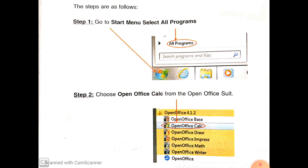Step 1: Go to Start menu, select all programs. Step 2: Choose OpenOffice Calc from the OpenOffice Suite.